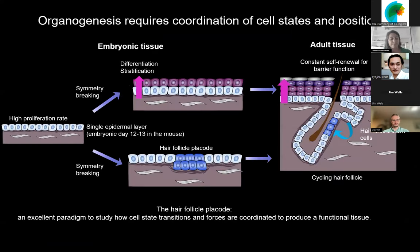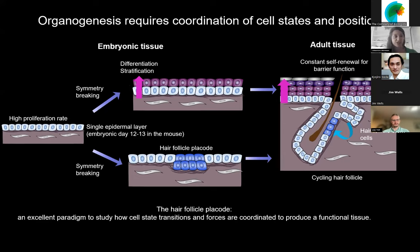To build and maintain a functional organ or tissue, forces and phase transition need to be tightly coordinated in time and in space. One of our favorite models in the lab to study this mechanism is the skin epithelium. The skin is the largest organ of the body — it's a multi-layer organ that serves as a critical barrier function.